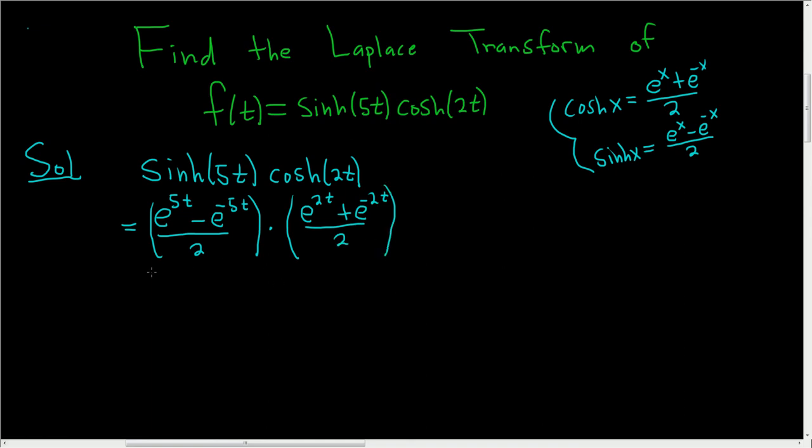So here we can pull out 1 fourth, because 2 times 2 is 4. So this is 1 fourth. And now what we'll go ahead and do is we'll FOIL in the numerator. So FOIL. So first is going to be e to the 5t times e to the 2t. When you multiply these, you add the exponents. So it's e to the 7t, because 5t plus 2t is 7t.